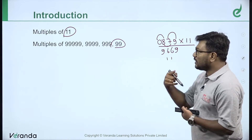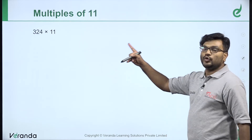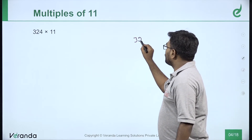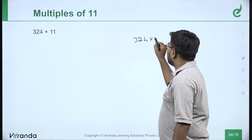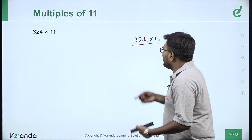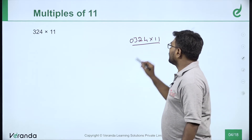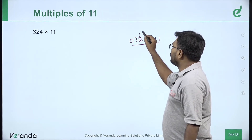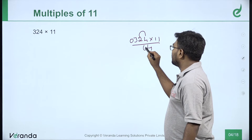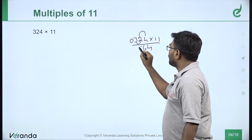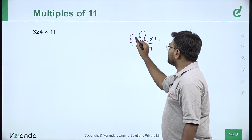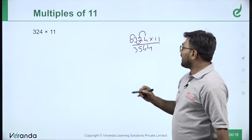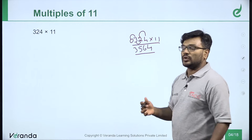Let's do this example: 324 into 11. This is how to apply. The first number stays the same — the last digit is 4. Next, 2 plus 4 is 6. Then 3 plus 2 is 5. Then 0 plus 3 is 3. Your answer: 324 into 11 is 3564. This is your answer.